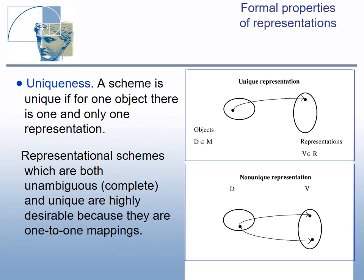The next property is uniqueness. A scheme is unique if for one object there is one and only one model representation. The scheme is non-unique if one object can have two or more models. Representation schemes which are both unambiguous, complete, and unique are highly desirable because they are one-to-one mappings.